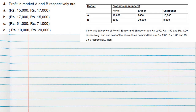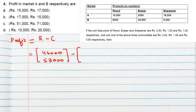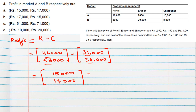Question number four asks for profit in Market A and B respectively. Profit equals total revenue minus total cost. Revenue matrix was 46,000 and 53,000; cost matrix was 31,000 and 36,000. So profit for Market A = 46,000 − 31,000 = 15,000, and for Market B = 53,000 − 36,000 = 17,000. Option A is correct.